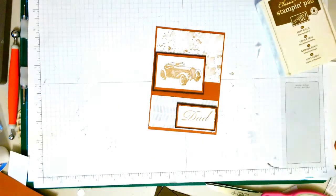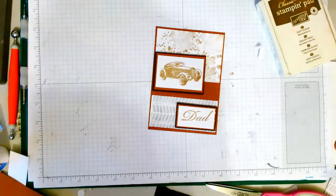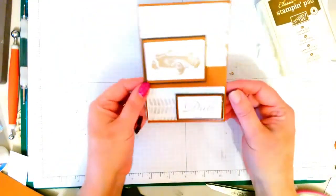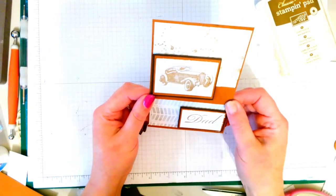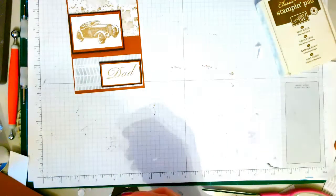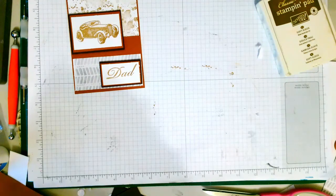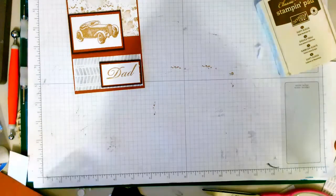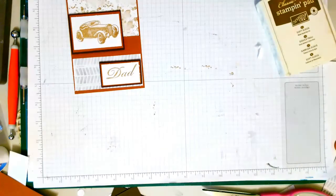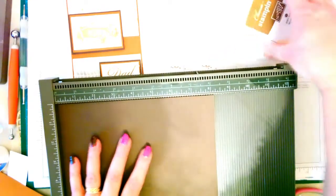That was Soft Suede. I haven't got any small diamonds on me at the minute, but I shall use some. Then I need my base which I nearly forgot about. It's five and seven eighths by eight and a quarter scored at four and an eighth.